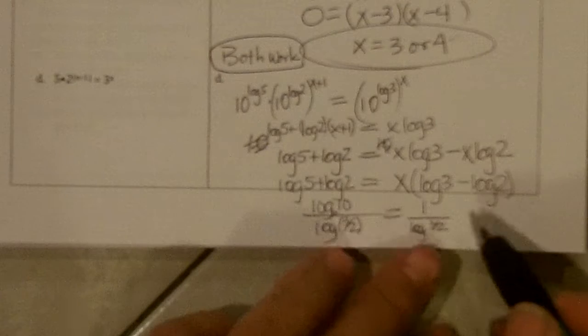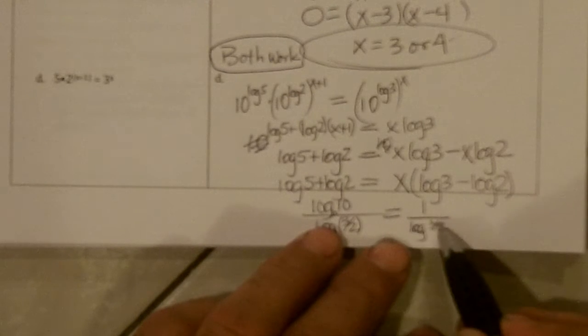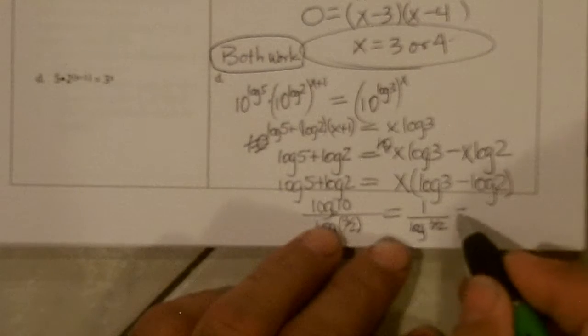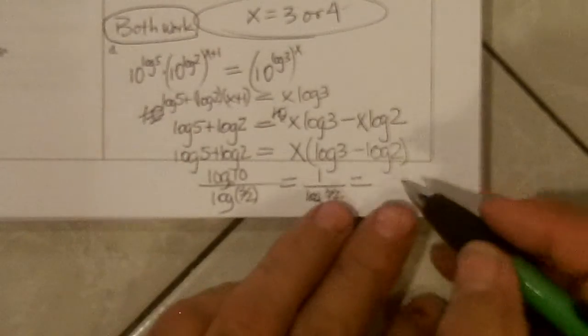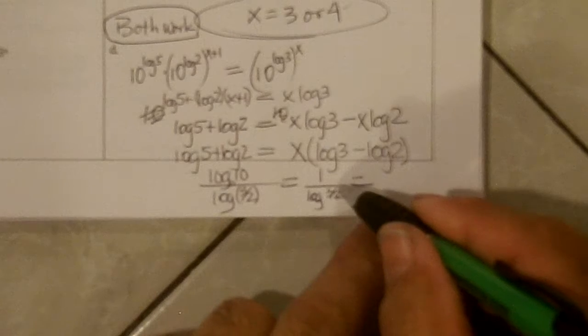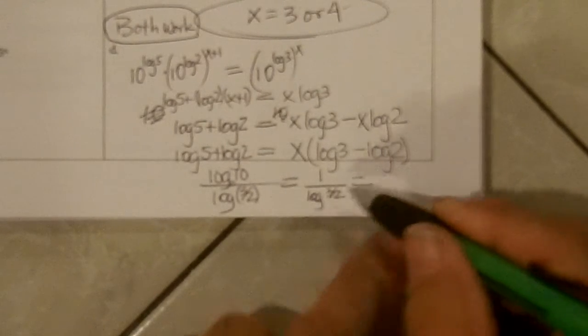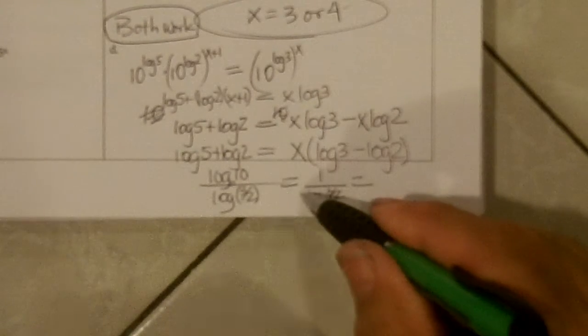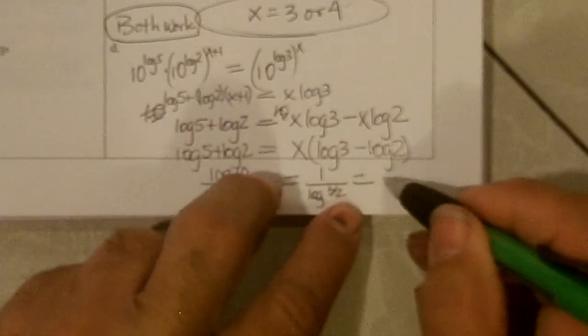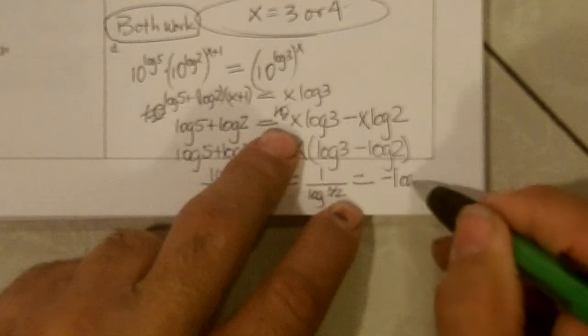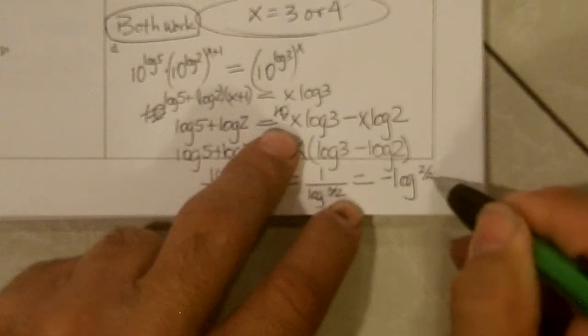Now, I could actually take this to the minus 1, that would be 2 over 3, because the negative would flip it. And I could put the negative in front, and it could become negative log of 2 divided by 3.